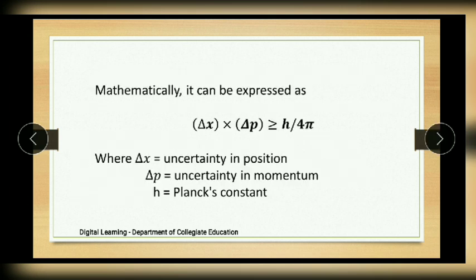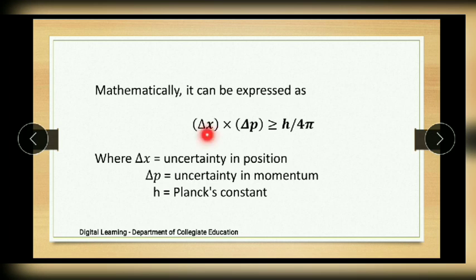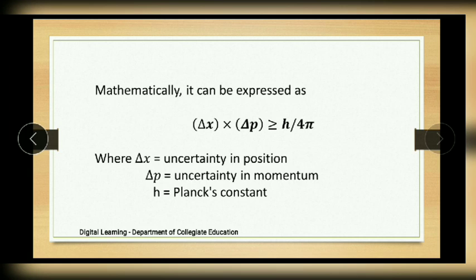Mathematically, the Heisenberg uncertainty principle is written as: Δx × Δp ≥ h/4π, where Δx is the uncertainty in position, Δp is the uncertainty in momentum, and h is Planck's constant. If Δx is very small — meaning smaller error in locating position — then Δp would be very large, meaning greater uncertainty in momentum, and vice versa.